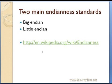The two main endianness standards are big endian and little endian. Big endian means starting from the bigger end or higher end, and little endian means starting from the tail end or little end.